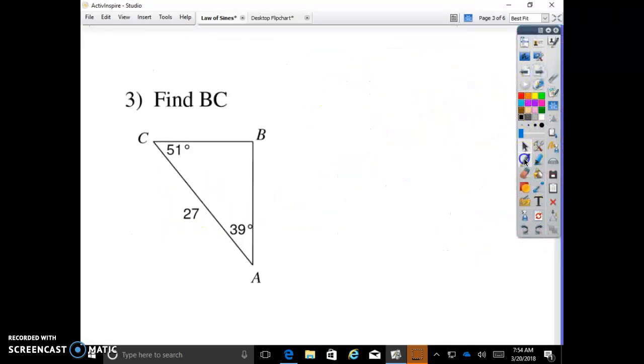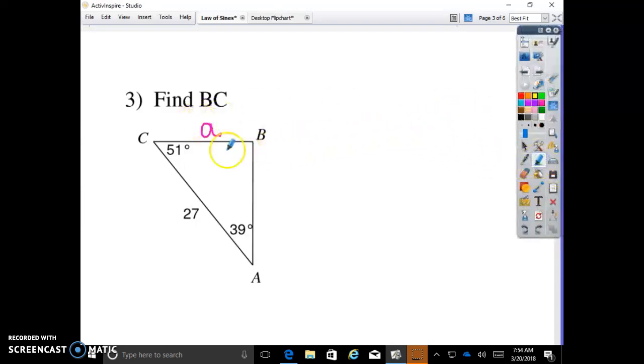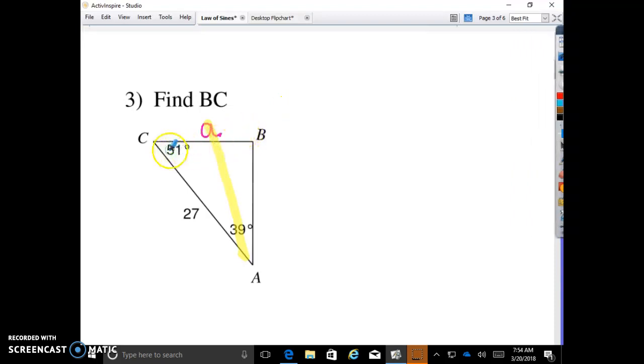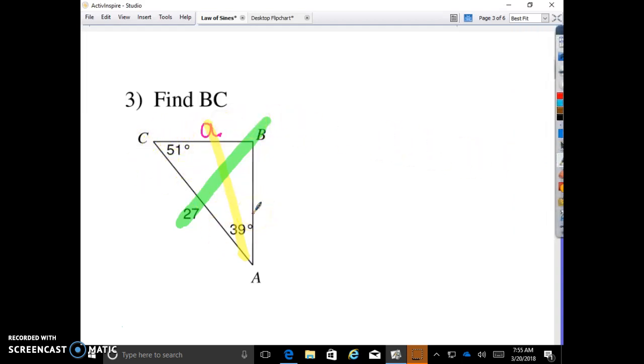So we're looking for BC. BC is across from angle A, so we're going to call this side A. And then we need another match. We have the 51 goes with an unknown side length. We have a side length that's 27, but we can find angle B, right? We have enough information to find angle B. So 180 minus 51 minus 39. That is 90 degrees.